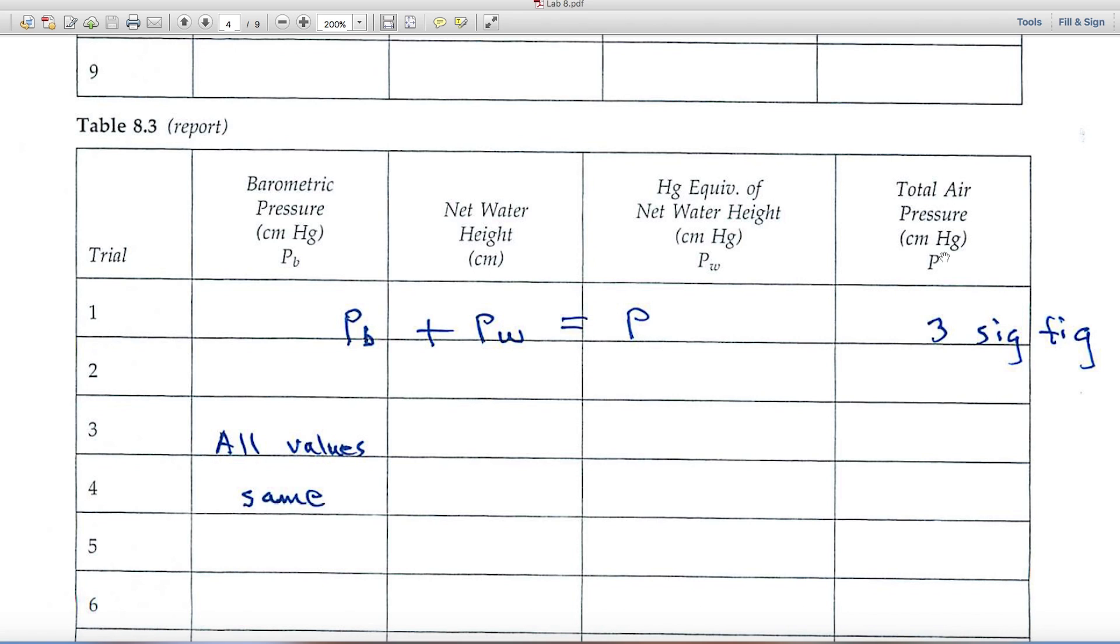And finally, the fourth column is your goal. And it's equal, that's P in the fourth column, is equal to the barometric pressure plus the net water height, I'm sorry, the mercury equivalent, this PW right here. So it's PB plus PW is equal to P. And you'll want to make sure that your answer is expressed to three significant figures.